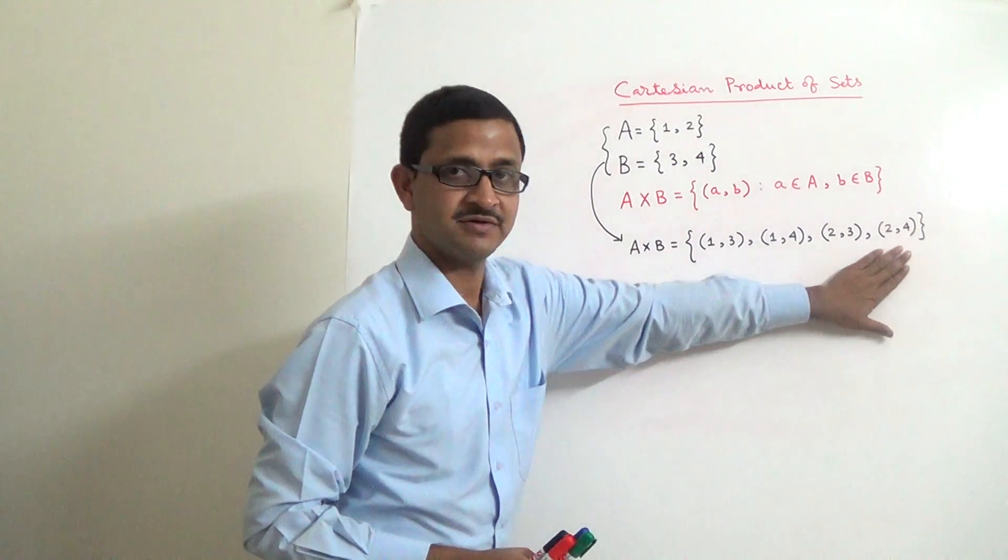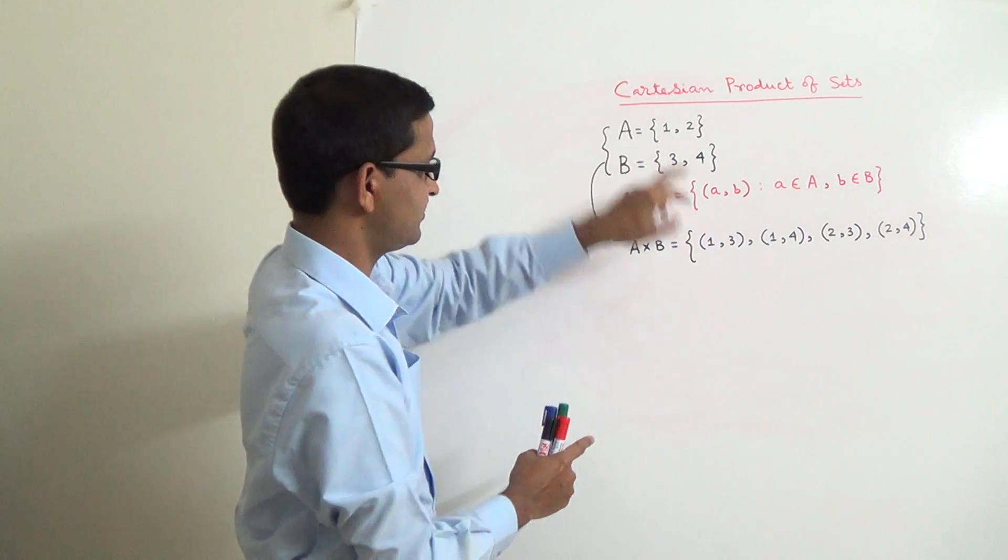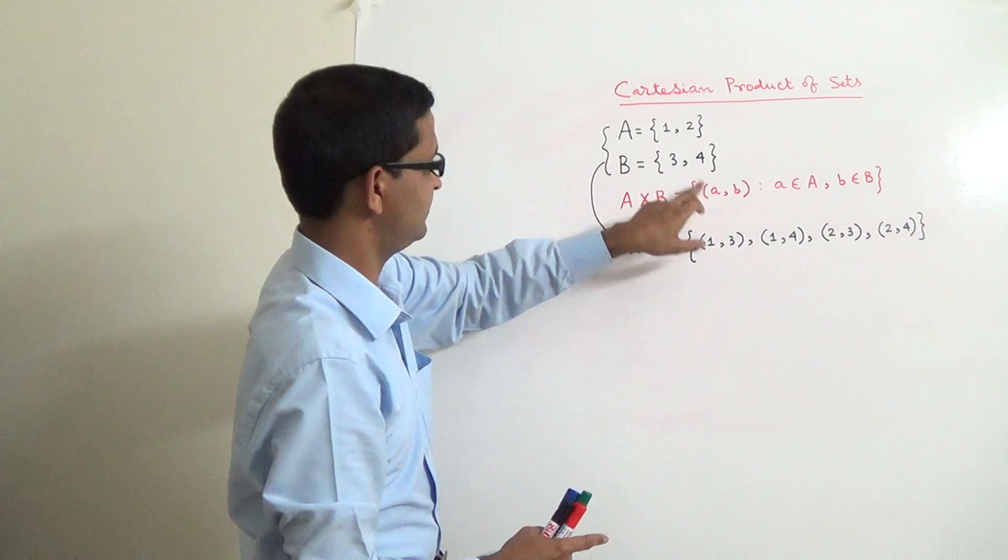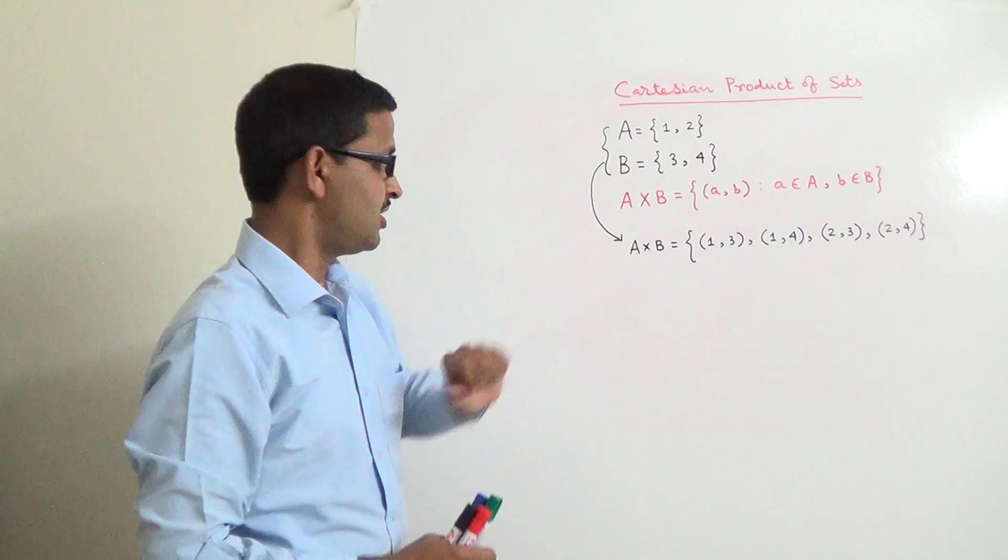In all these ordered pairs, the first element belongs to the set A and the second element belongs to the set B. In all these ordered pairs.